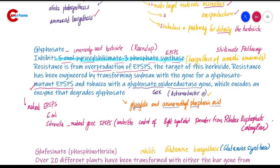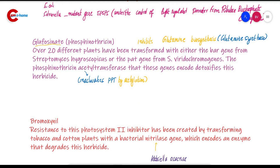Next we study phosphinothrixin, also known as glufosinate. Phosphinothrixin inhibits glutamine biosynthesis and is an irreversible inhibitor of glutamine synthase in plants and bacteria.